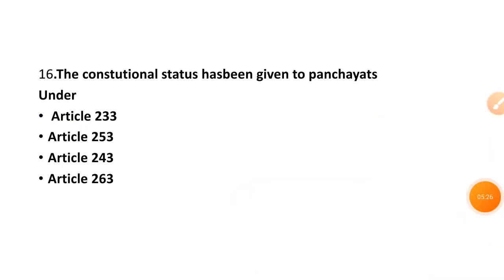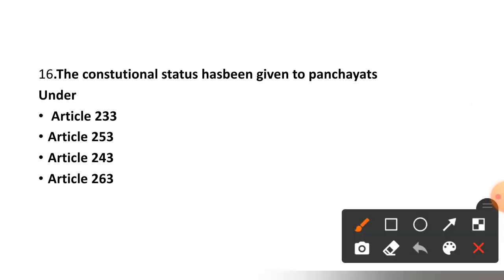Question number sixteen: Constitutional status has been given to the Panchayat under which article — 233, 253, 243, or 263? The correct answer is Article 243.